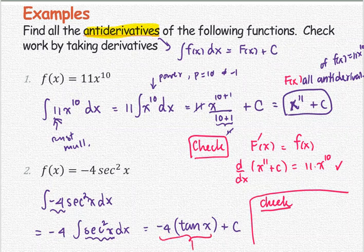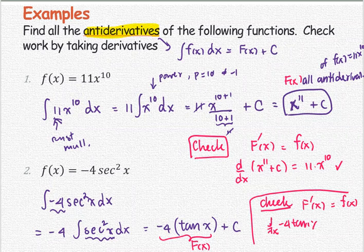We can check the solution: capital F prime equals lowercase f, so the derivative with respect to x of negative 4 tangent(x) gives negative 4 secant squared x, which matches.